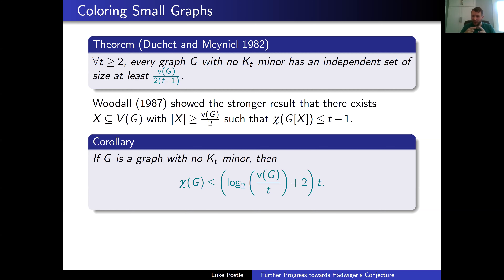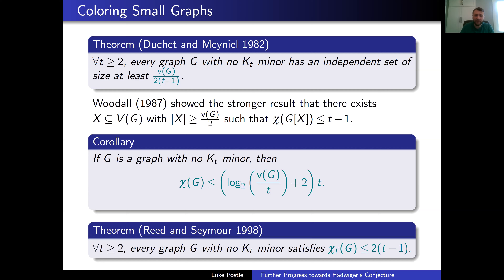That's a natural sticking point for the t(log log t) barrier — we don't know how to do small graphs better than this corollary. But this is actually very good because the known tight examples for the degeneracy bound, the t√(log t) constructions, were all random graphs with around t√(log t) vertices. This simple corollary takes care of those — it shows we don't have to worry about those random constructions. Reed and Seymour had also generalized Duchet-Meyniel from independent sets to fractional coloring, showing every graph with no Kt minor is fractionally (2t-1)-colorable.